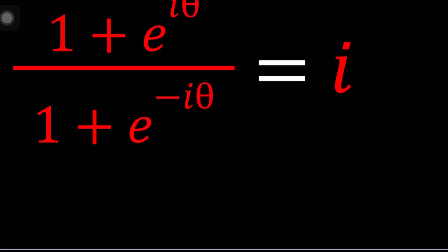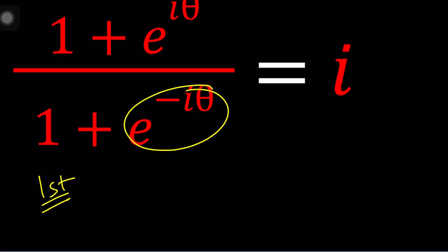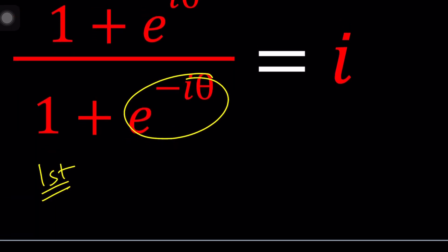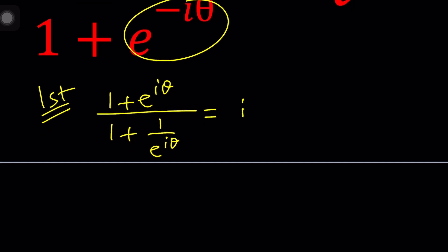First method, I want to go ahead and just treat this as an exponential, and we have a negative exponent here at the bottom. Let's go ahead and flip it because that is the reciprocal. So we're going to write this as 1 plus e to the iθ divided by 1 plus 1 over e to the iθ. That's what it means. Equals i. And then make a common denominator, or you can multiply everything by e to the power iθ. That will be pretty much the same thing. Let's go ahead and do that.